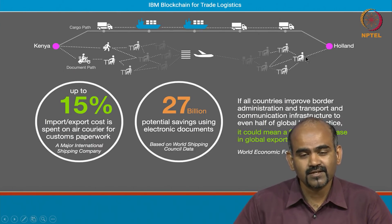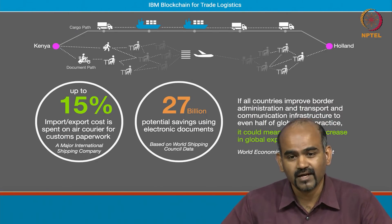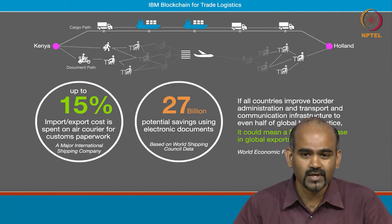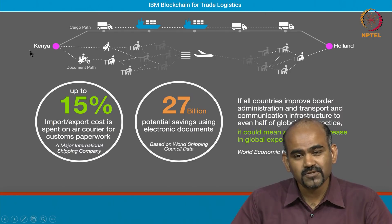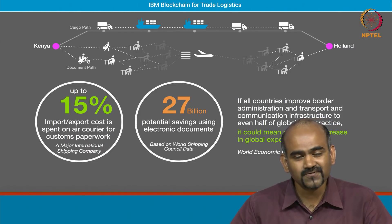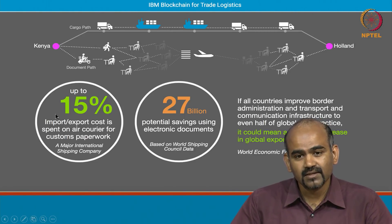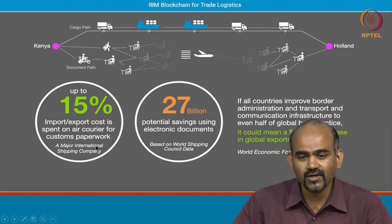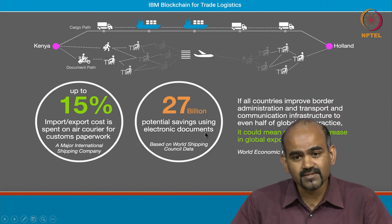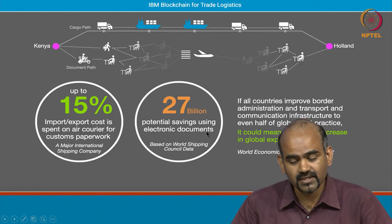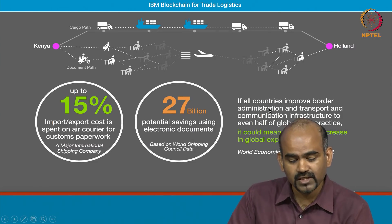Once the shipment reaches the other end, there is real estate cost because the shipment is now in the yard at the import country's port, just waiting. Each day it waits there has a cost because you have to pay for warehousing. What ends up happening is people actually ship the documents by first class air freight. While the goods go over sea taking a week or 10 days, the documents are flown first class just to avoid some of the additional cost. It is estimated that about 15 percent of all import-export costs is actually just spent couriering the documents across because the documents have been delayed. There is huge potential saving if we can go from paper documents to electronic documents — estimated at 27 billion dollars per year, based on the World Shipping Council data.